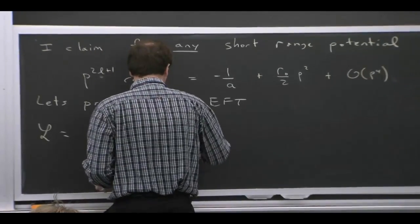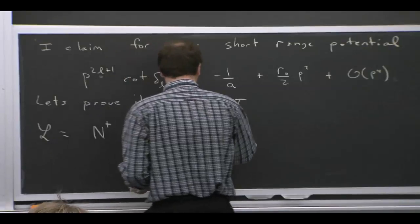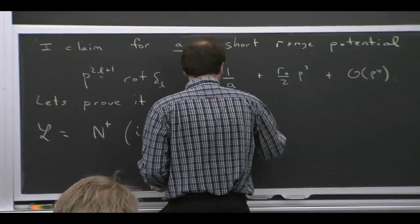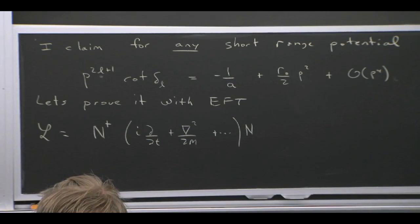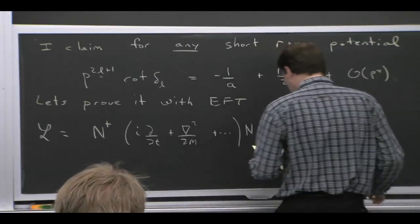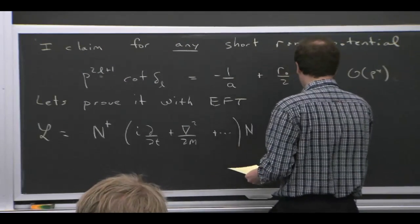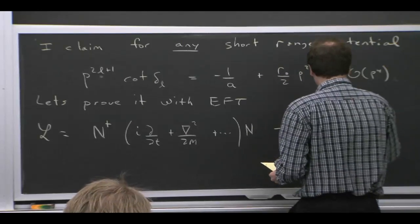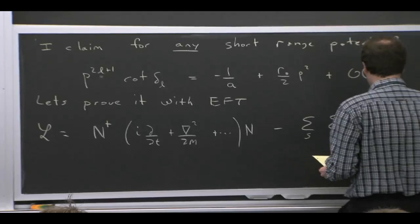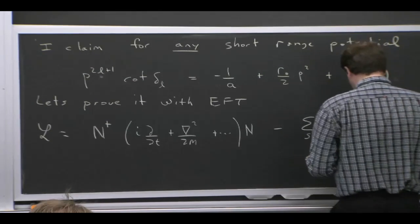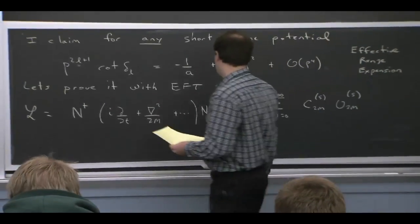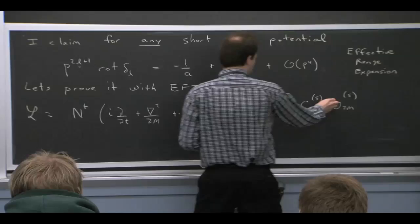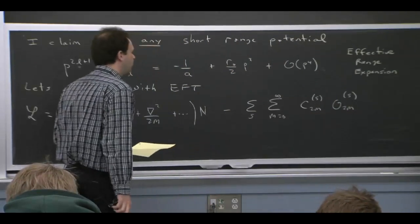there's no, it's not a gauge theory. So we just have ordinary derivatives. So if you like, you can think of what I'm writing here is kind of like our iV dot D term, except I've picked the center of mass frame. And this would be like the kinetic energy term. But now it's just partial squared with no D, et cetera. And then there's a bunch of contact interactions.